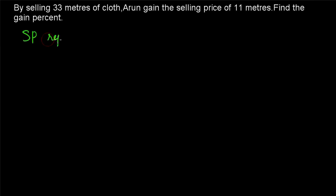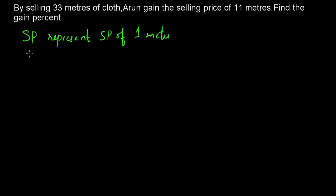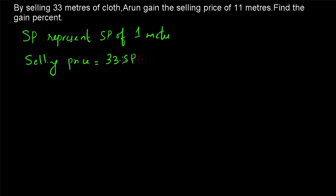Let SP represent the selling price of 1 meter — we write it this way just for clarity and to avoid confusion. So the total selling price when selling 33 meters of cloth is equal to 33 SP.